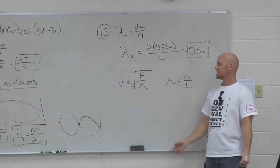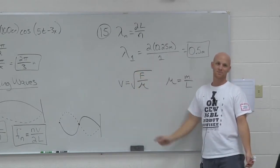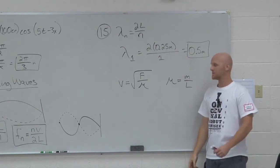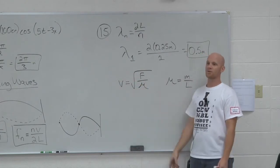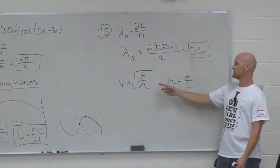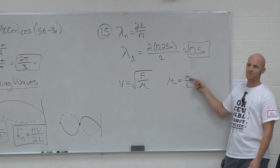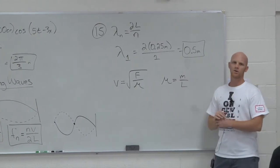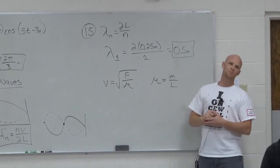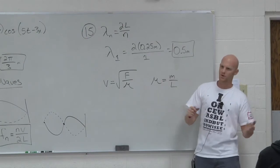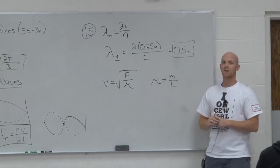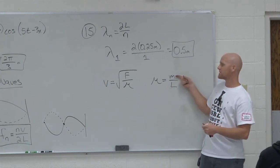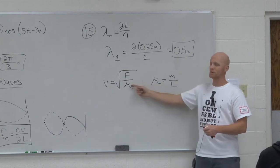Just one little extra equation — it's plug and chug. How many variables are in this equation? Three. So if I want you to solve for one, I have to give you the other two. Technically I could make it four variables if instead of mu I gave you the mass and length of the string. Oftentimes we'll just tell you the string weighs 100 grams per meter, or give it right as mu, or give you the mass of the whole string and the length, and you calculate it before you plug it in.